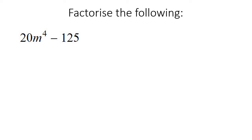Here's our next one. Now, these numbers are not perfect squares. But remember, the first step of any factorizing is to always take out a common factor. The common factor here would be 5. Then over here you'd be left with 4m to the power of 4, and 125 divided by 5 is 25.